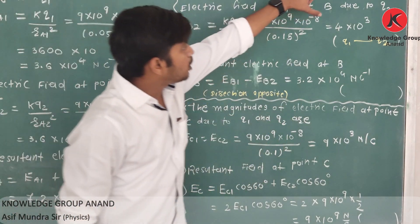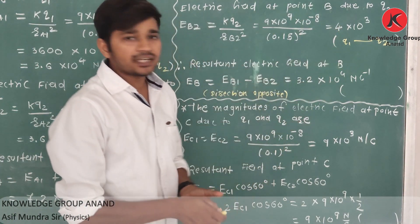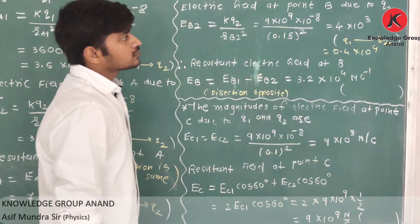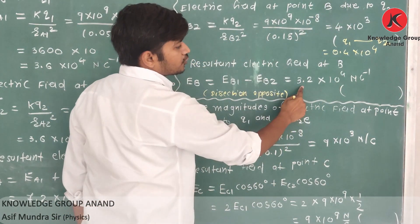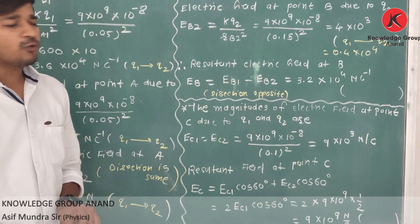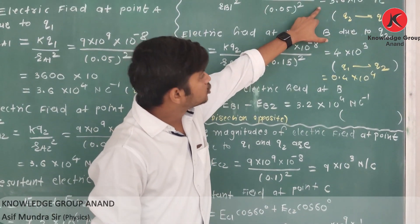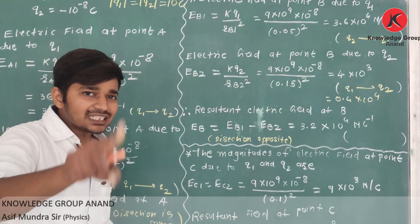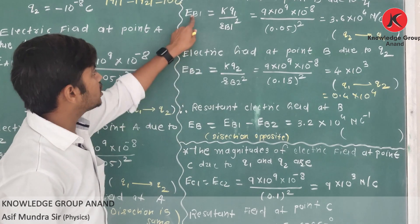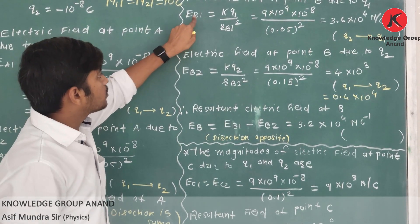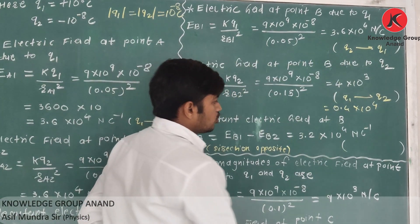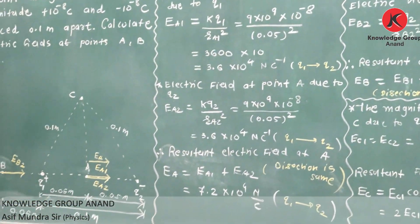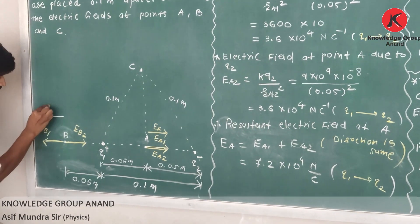So resultant electric field at B, eB = eB1 minus eB2. Why minus? Direction is opposite. That is 3.6 into 10 raised to 4 minus 4 into 10 raised to 3. Writing 4 into 10 raised to 3 as 0.4 into 10 raised to 4, we get 3.6 minus 0.4 = 3.2 into 10 raised to 4 newtons per coulomb. Since eB1 is greater, the resultant is in the direction of eB1 — from q2 to q1.